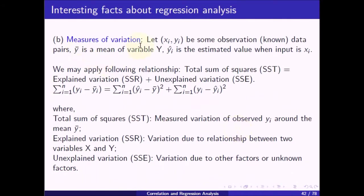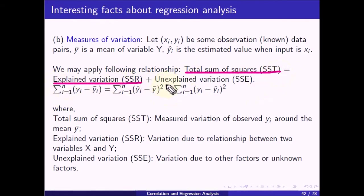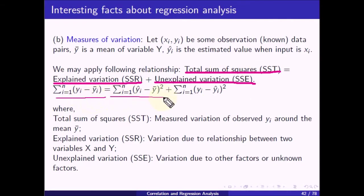Now, for the measure of variation: let (xi, yi) be known data pairs, y-bar be the mean of variable y, and yi-hat be the estimated value when input is xi. The relationship is: total sum of squares SST equals explained variation SSR plus unexplained variation SSE. SST is the summation of (yi minus y-bar) squared, and SSR is the summation of (yi-hat minus y-bar) squared, for i from 1 to n.